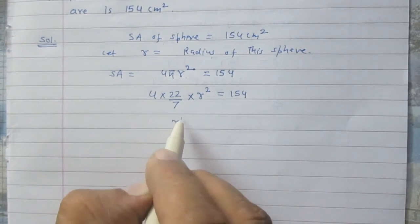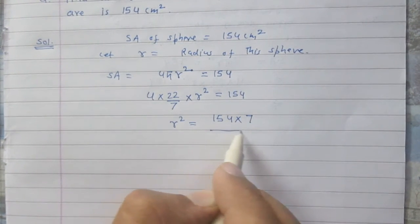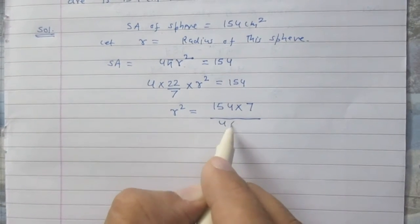On transposing the terms to the right hand side we will get 154 × 7 divided by 4 and 22.